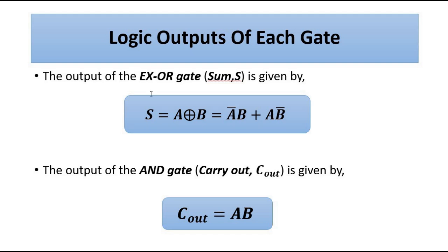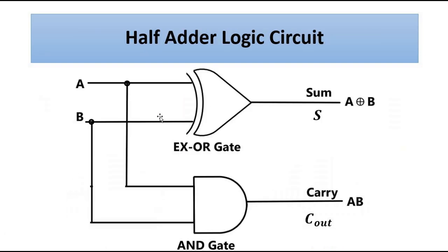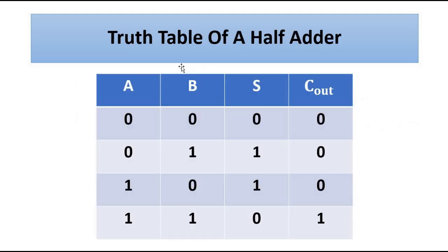So there are two gates used to give the two outputs directly: the XOR gate for the sum operation and the AND gate for the carry operation. The two inputs A and B are given to the XOR gate to get the sum output A XOR B, which equals A'B + AB', and the carry output is simply A AND B.